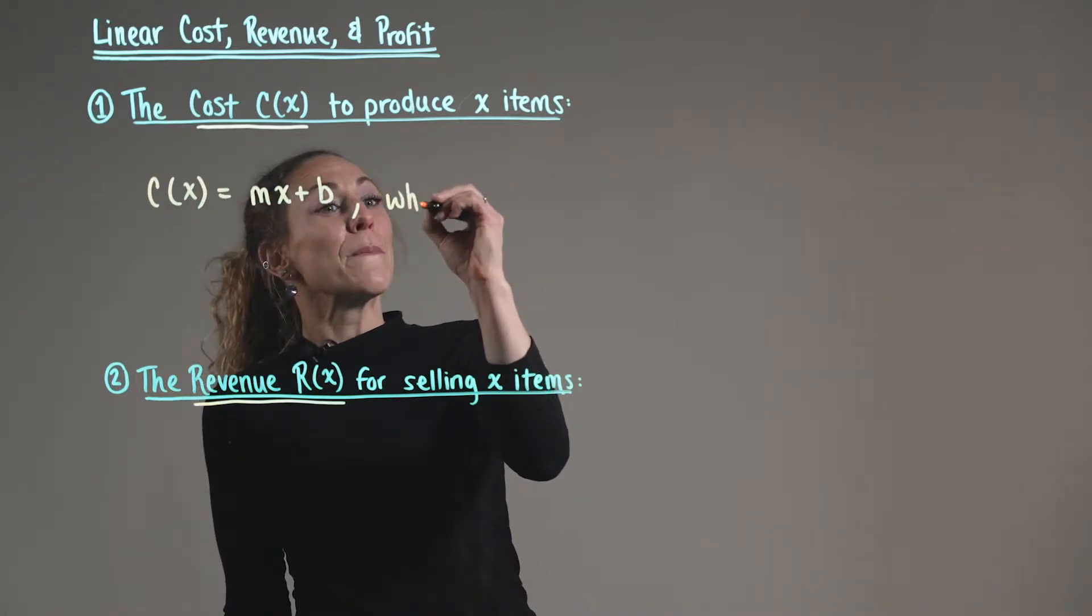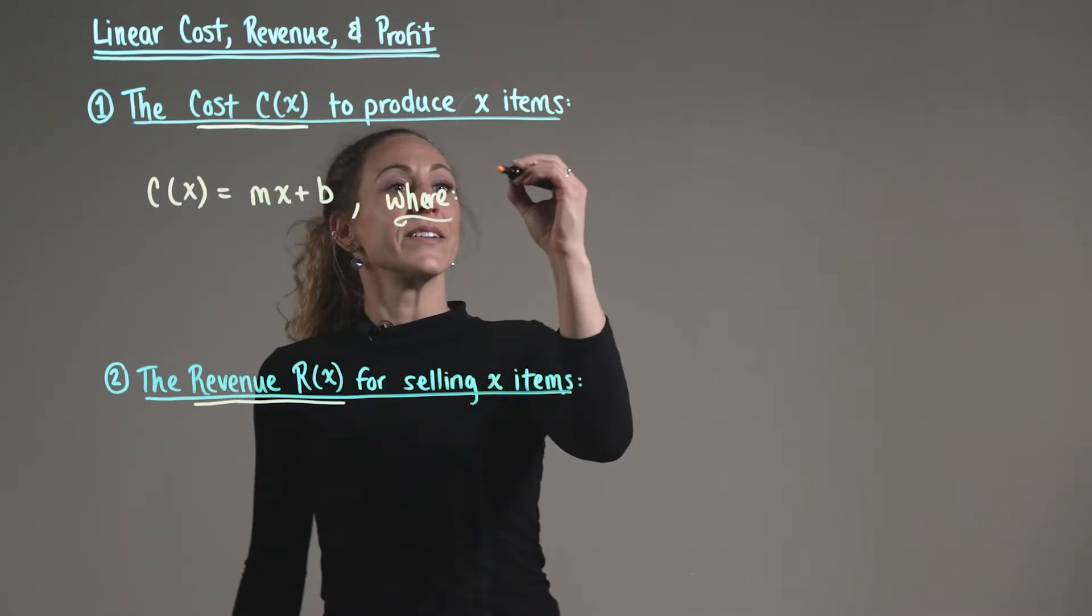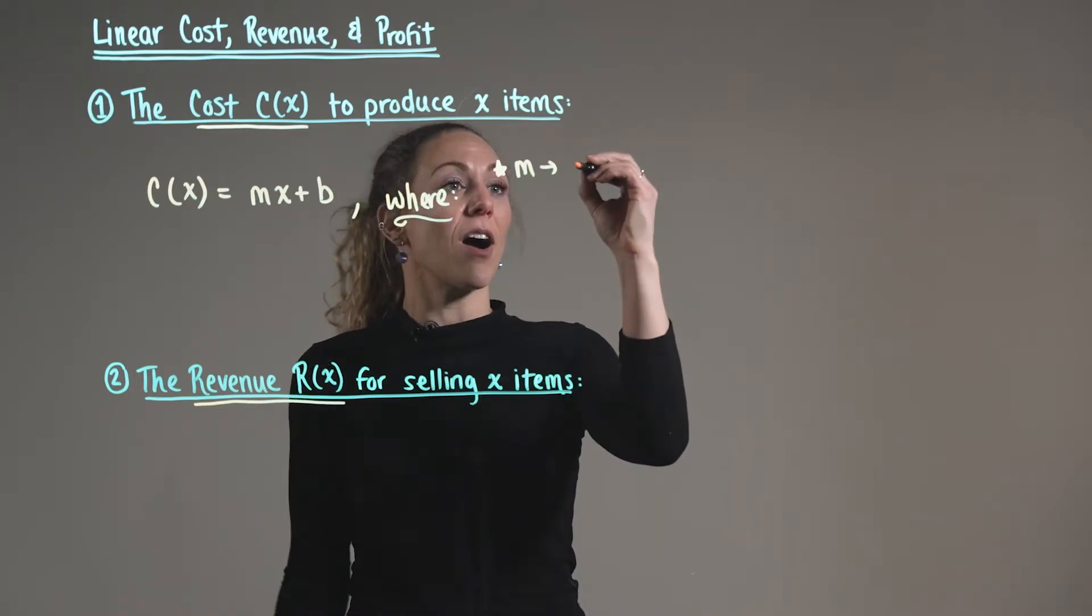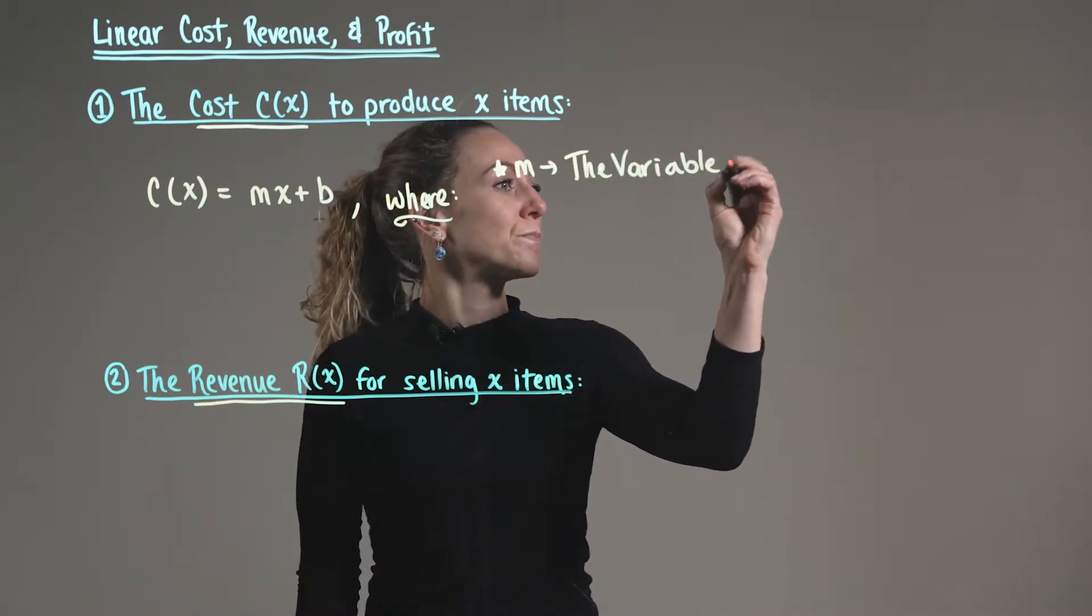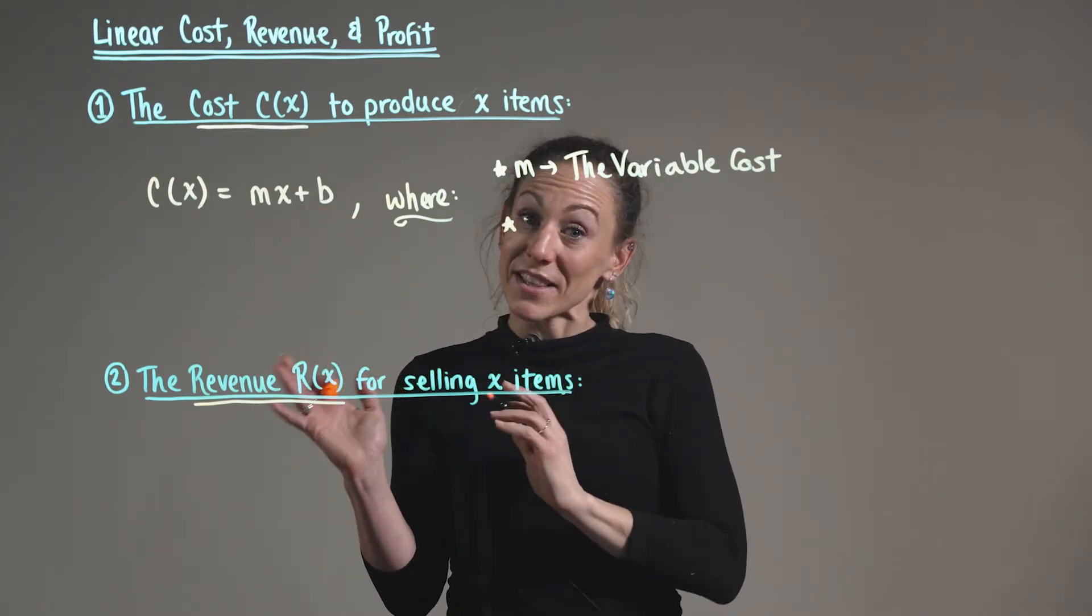In this particular case, m is representing the variable cost, and our y-intercept b is representing the fixed cost.